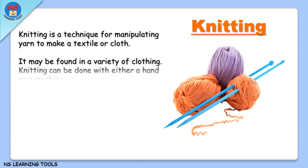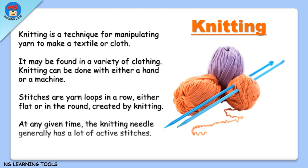Knitting. Knitting is a technique for manipulating yarn to make a textile or cloth. It may be found in a variety of clothing, and knitting can be done with either a hand or a machine. Stitches are yarn loops in a row, either flat or in the round, created by knitting. The knitting needle generally has a lot of active stitches at any given time.